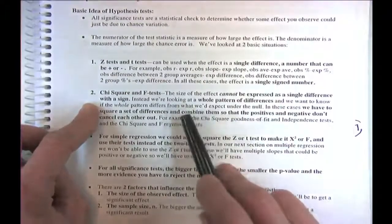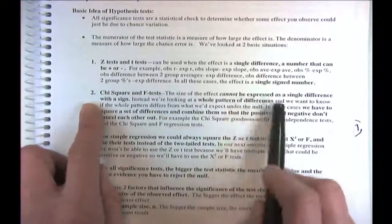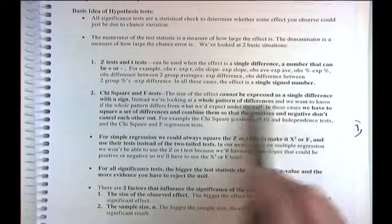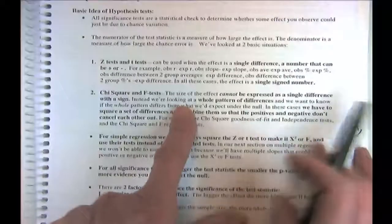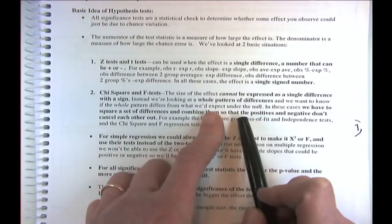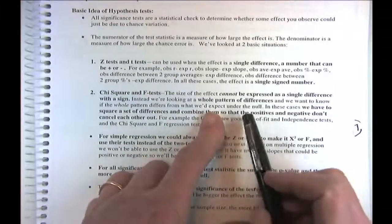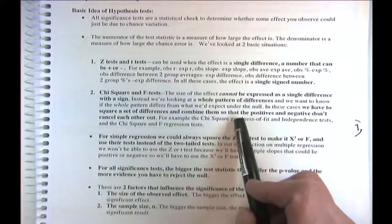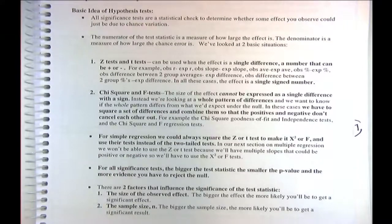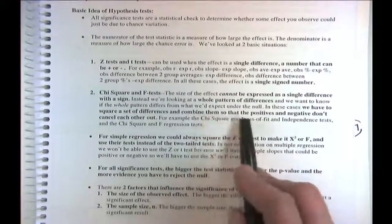Chi-squared and F tests are used when you can't express the size of the effect as a single signed difference — you have to look at the whole pattern of differences. We're heading towards multiple regression where there will be more than one slope, and we want to assess the effect of both slopes at once. Some slopes might be positive, some negative, so we can't simply subtract.